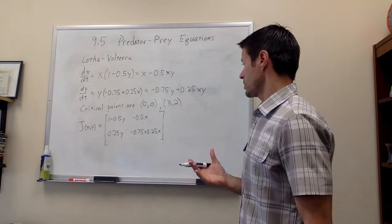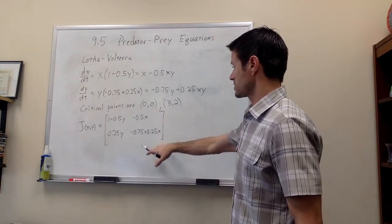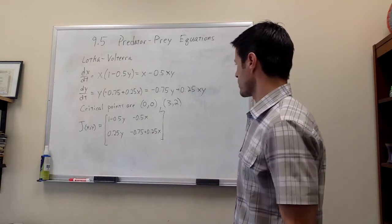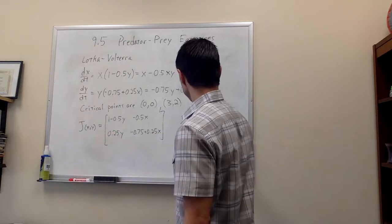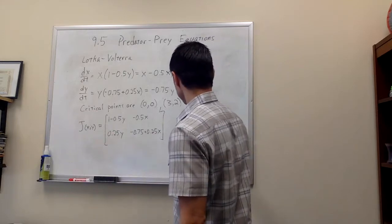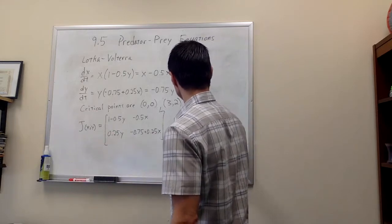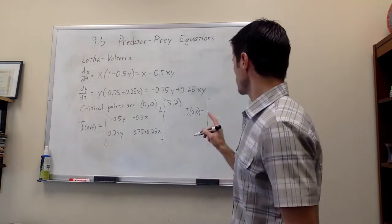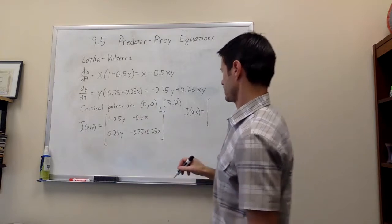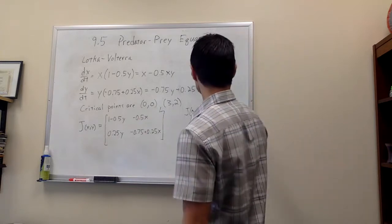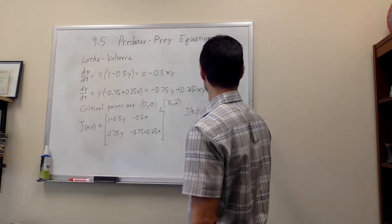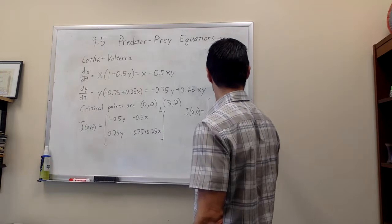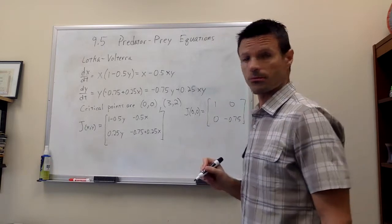So now what we're going to do is analyze the critical points by computing the Jacobian. I want to evaluate the Jacobian at these points. So if you evaluate the Jacobian at 0, 0, notice we get this nice looking matrix that's diagonal.